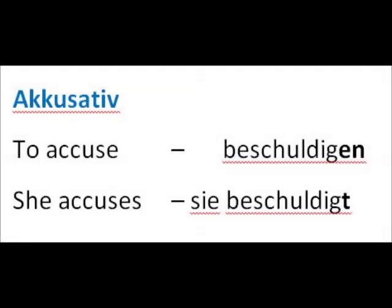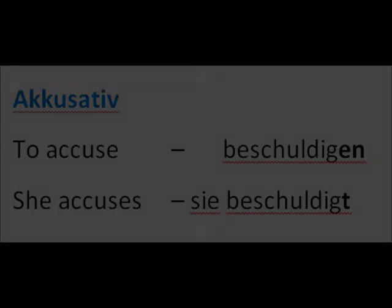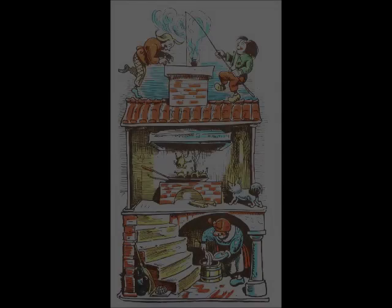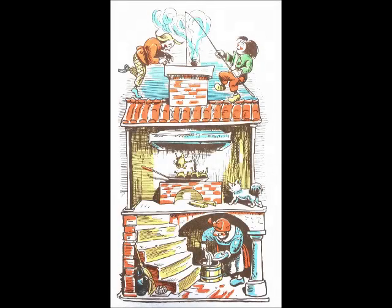The root of 'accusative' is indeed to accuse — 'beschuldigen' in German. Let's look at this with a famous German cartoon: Max and Moritz. The two are notorious ruffians.